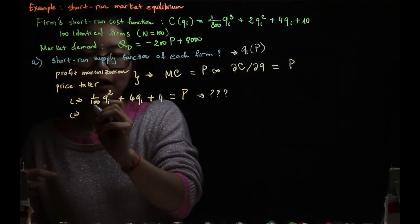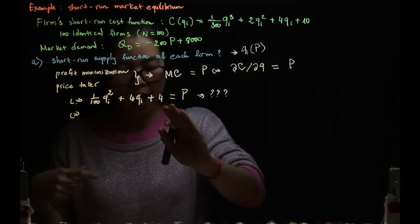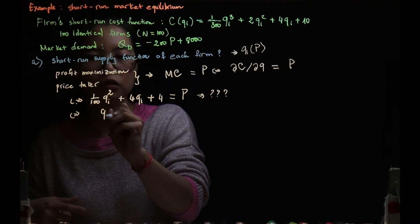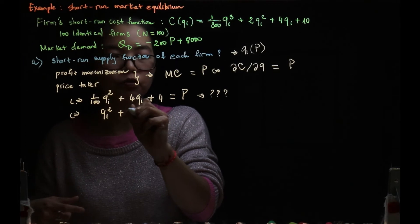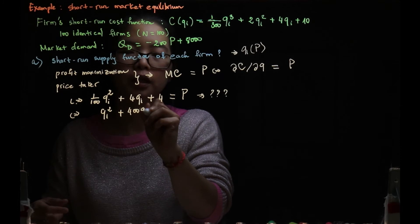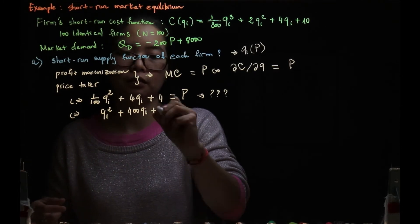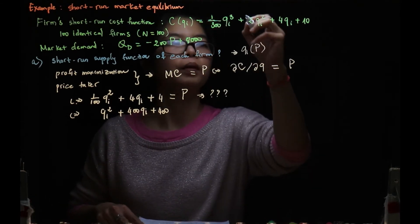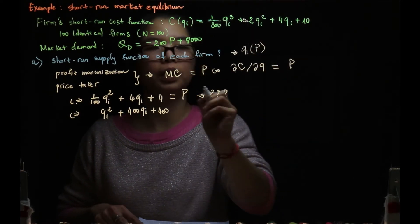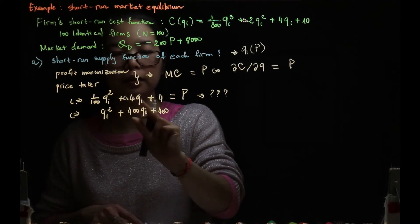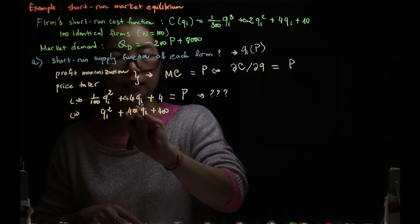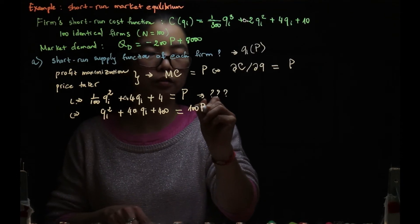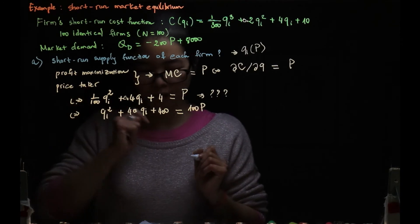We multiply both sides by 100 to clear the fraction. So 100 times (1/100) cancels, giving qi² plus — actually I made a mistake here: it should be 0.2 for the coefficient, and this is not 400 but 40. So we have qi² + 40qi + ... = 100P on the other side.